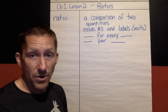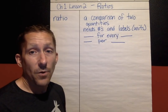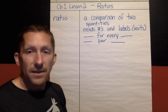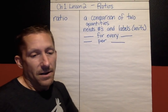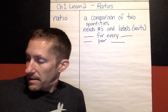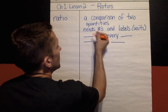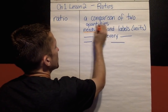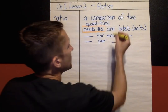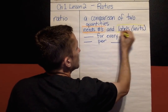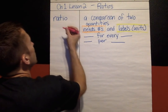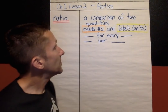Something else to note is that the order is important. If I'm saying 54 highlighters, the 54 has to come first, for every 36 students. The numbers and the labels have to match the words. I'm going to highlight some key stuff: a ratio needs numbers and it needs labels or units. And I'm just going to underline the keyword ratio.